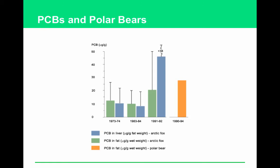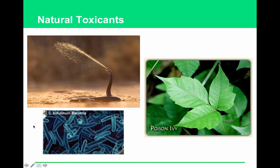Not all toxicants are synthetic. Natural toxicants include snake venom — shown here from a spitting cobra — poison ivy secretions, pollen for some individuals, and the botulinum toxin from bacteria, which is what is used in Botox to freeze facial muscles.